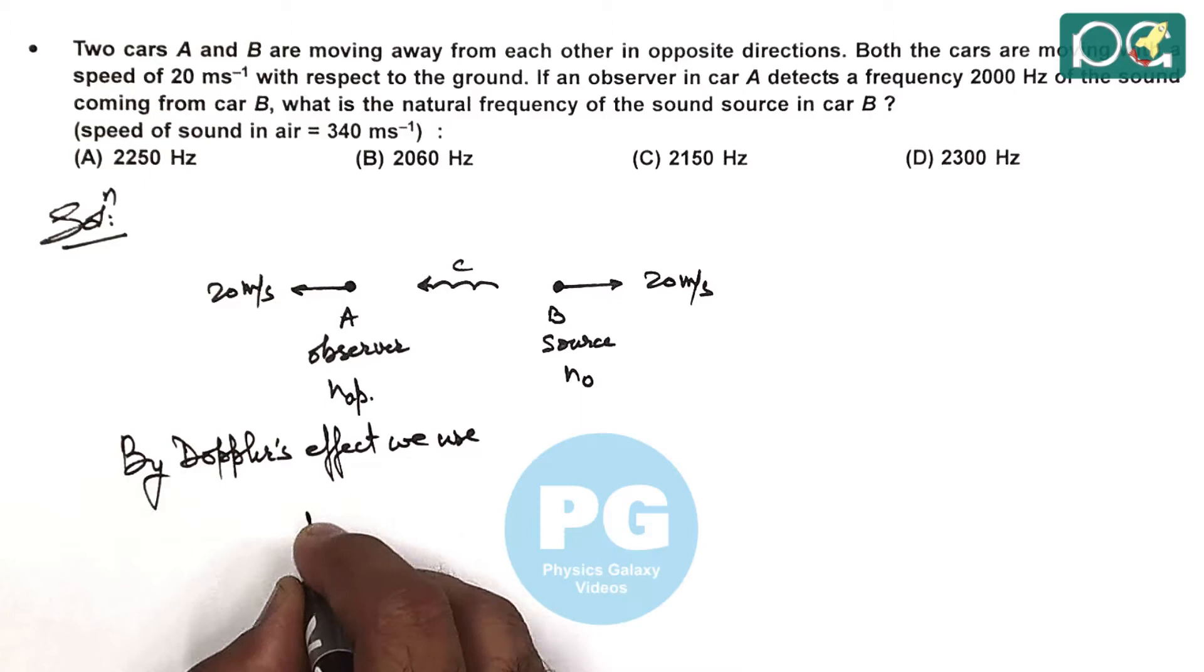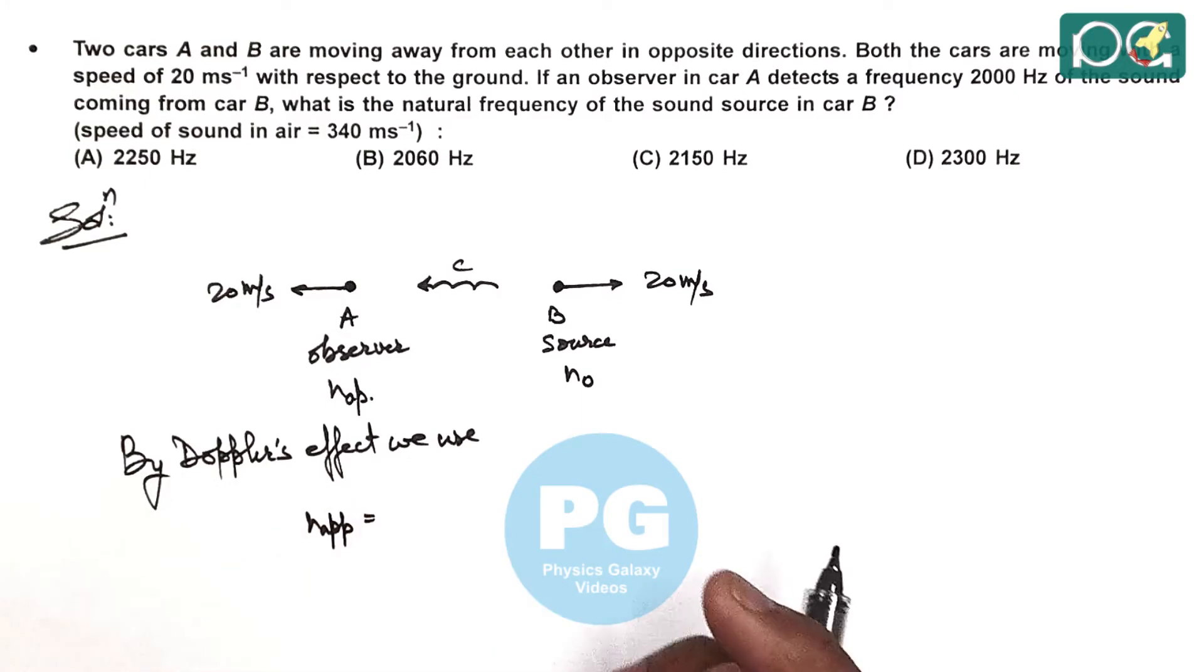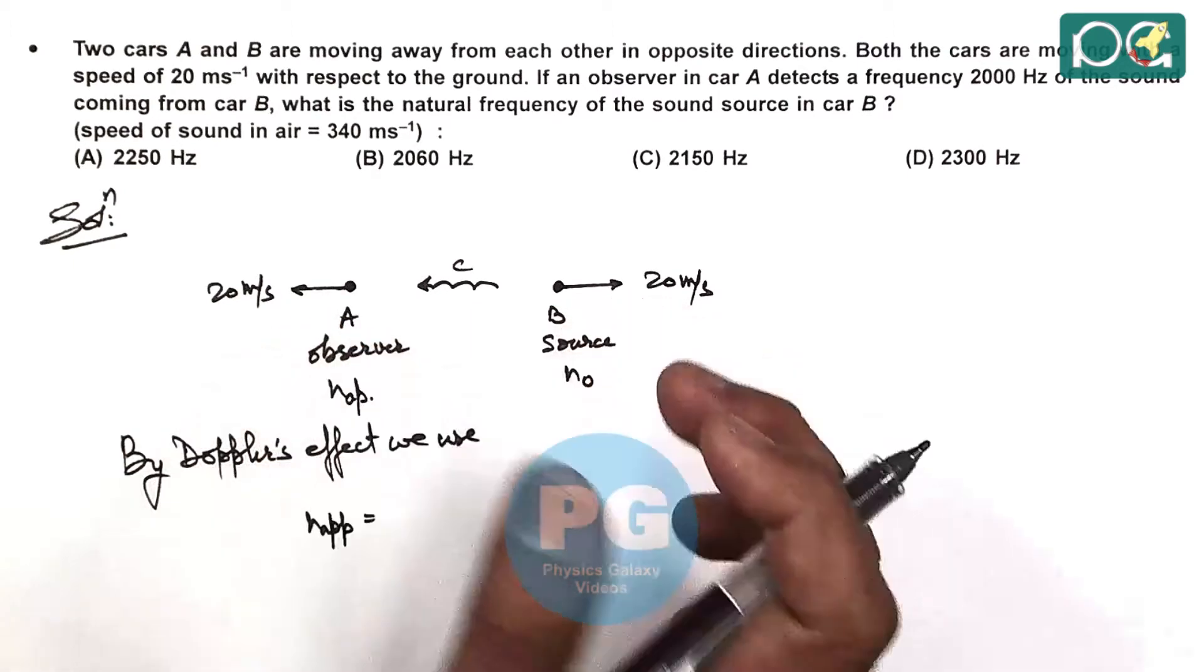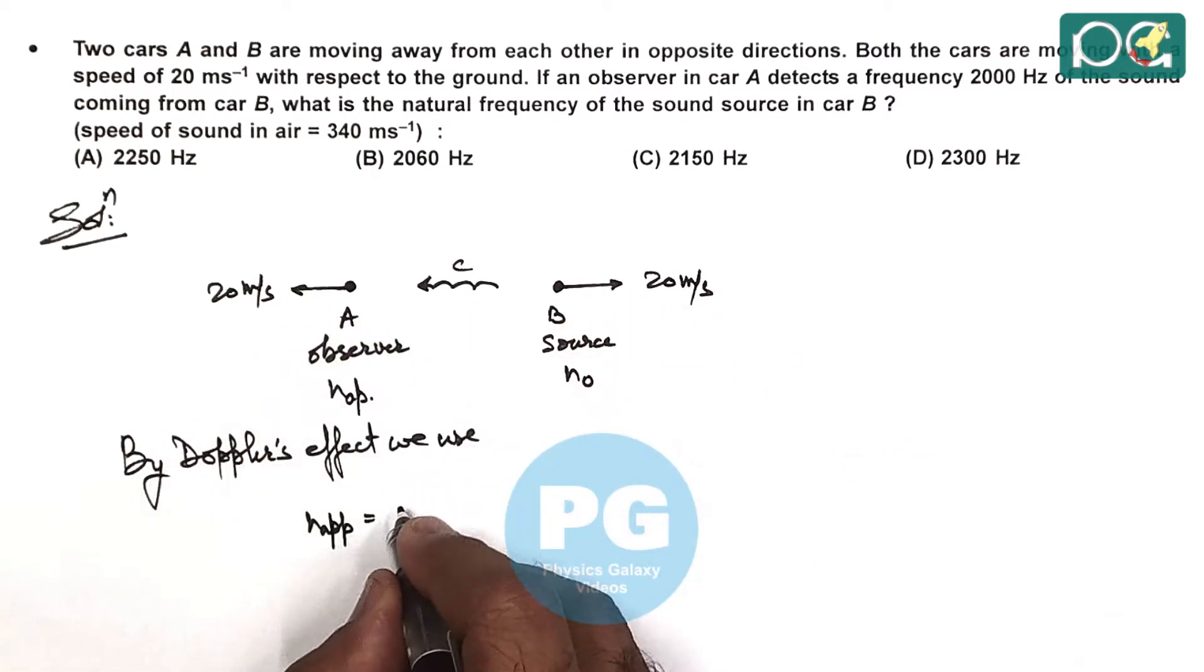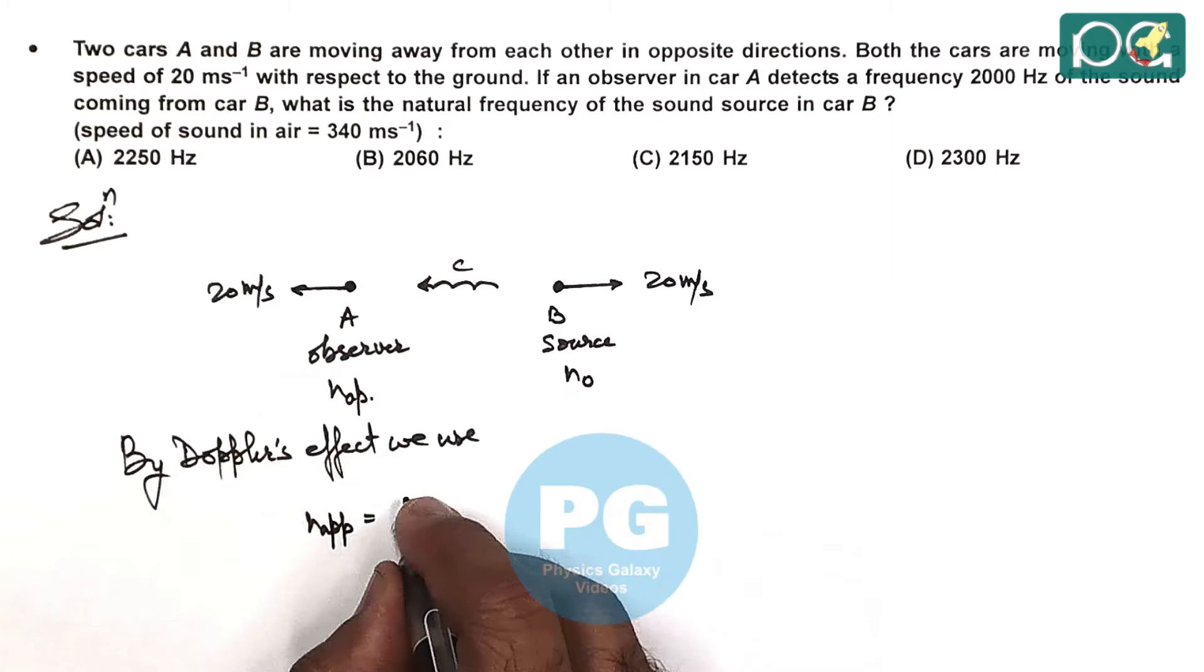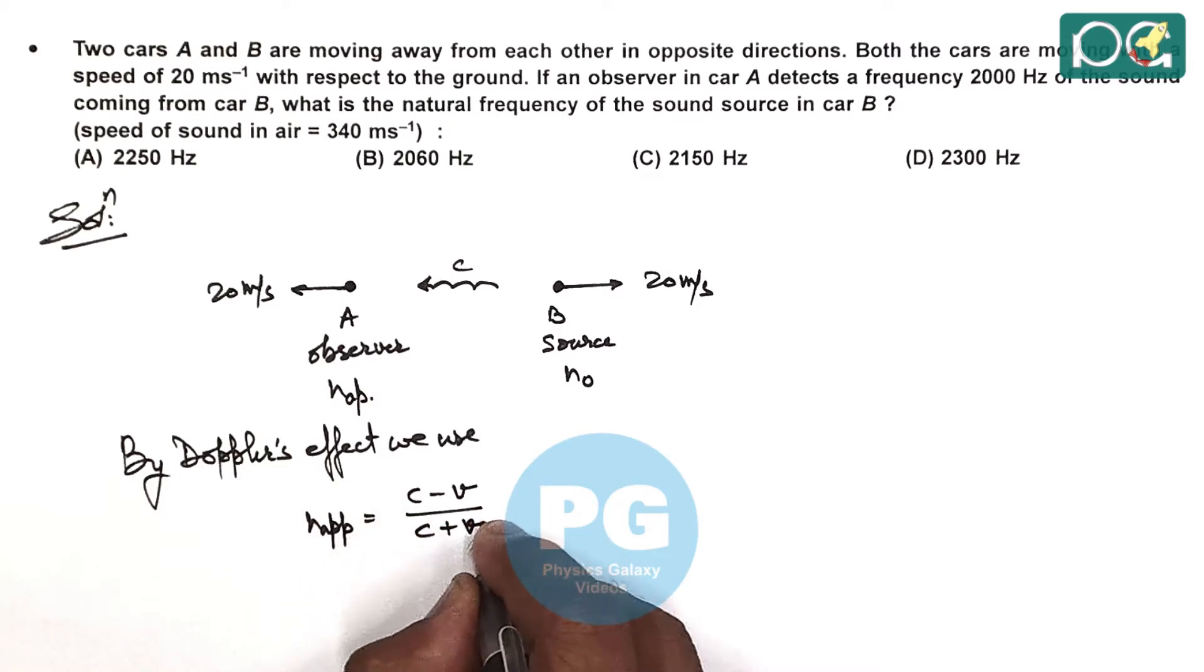We use N_apparent equals—as they are moving away from each other and the source and observer are receding—we will use (C minus V) divided by (C plus V) times N0, if N0 is the actual frequency of the source.